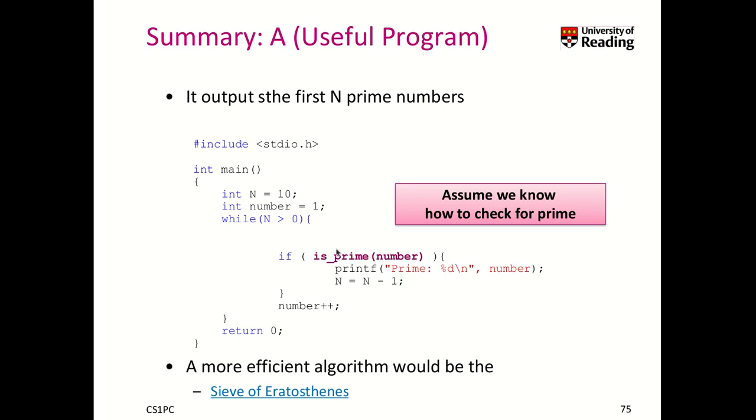So, isPrime, like I said, checks if a number is a prime number and in the while loop we increment, every time this while loop iterates through, we increment the number that we currently have, starting from 1. We start from 1, 2, 3, 4, 5 and so on.